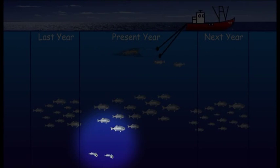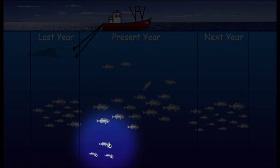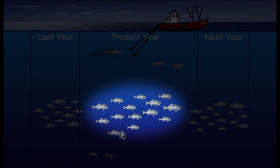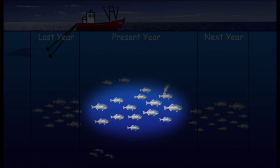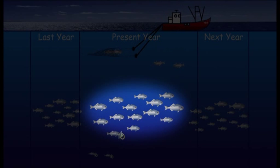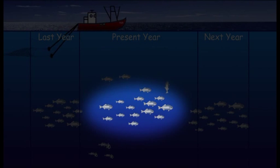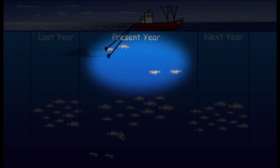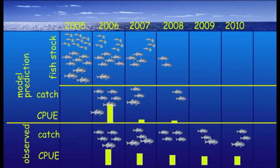That brings us to the end of the black box. Just to recap, in this section we combined all the different components of the stock assessment model and showed how they work together. At this point you might be thinking — well, how does the model actually use all this information? How do we know the model works? How do you know the results actually make sense? Well, it's called model fitting and sensitivity testing, and we'll talk about that in our next section: Opening the Black Box.